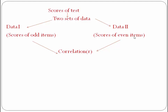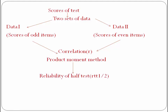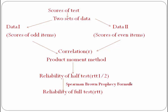Then we find the correlation between the scores of both data sets using the product moment method. The scores of odd items become data first and the scores of even items become data second. The correlation value that comes out will be the reliability of the half test, because we have split the test in half. Therefore, with this technique we get what we call the reliability of the half test.